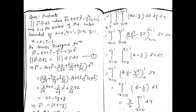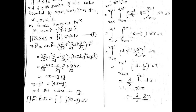Now there is another example: evaluate this integral where f-vector is given and S is the surface of the cube bounded by x=0, x=1, y=0, y=1, z=0, z=1. The limits are already given in the question. By Gauss Divergence Theorem, the first step is to calculate divergence of f. After calculating, divergence of f is 4z minus y.